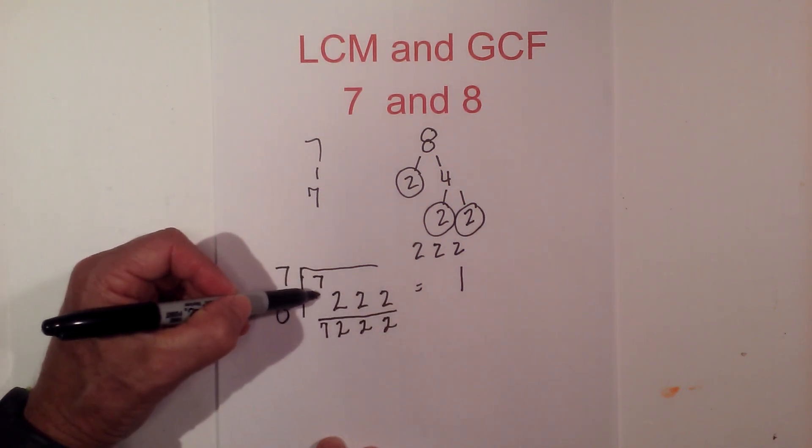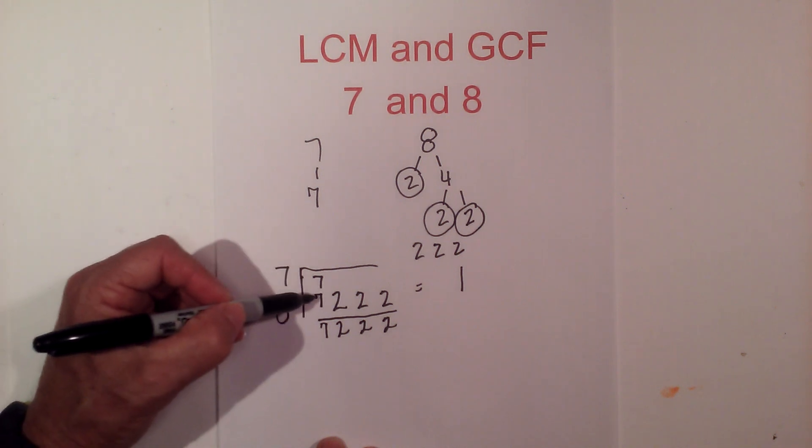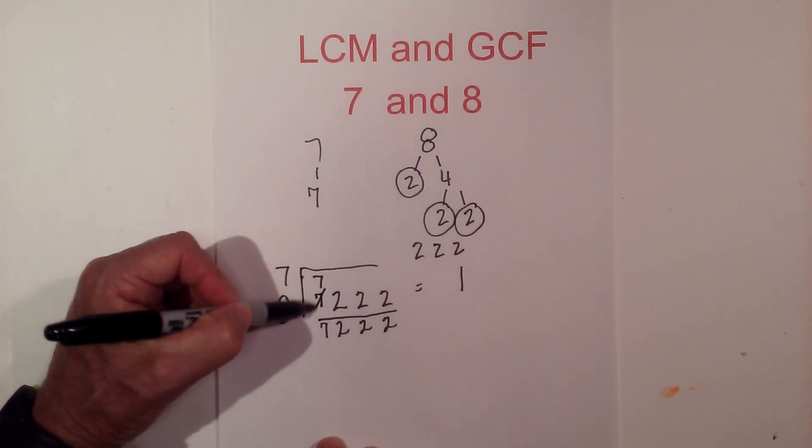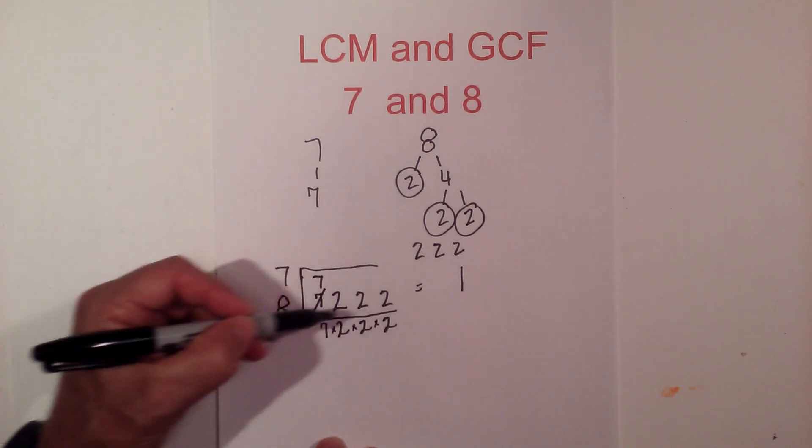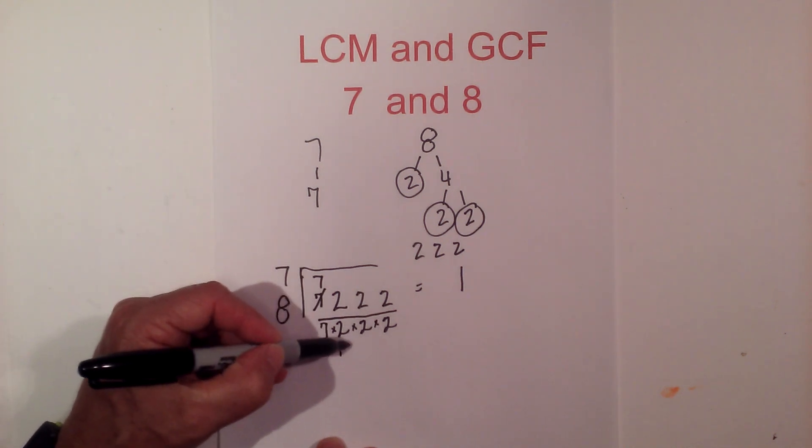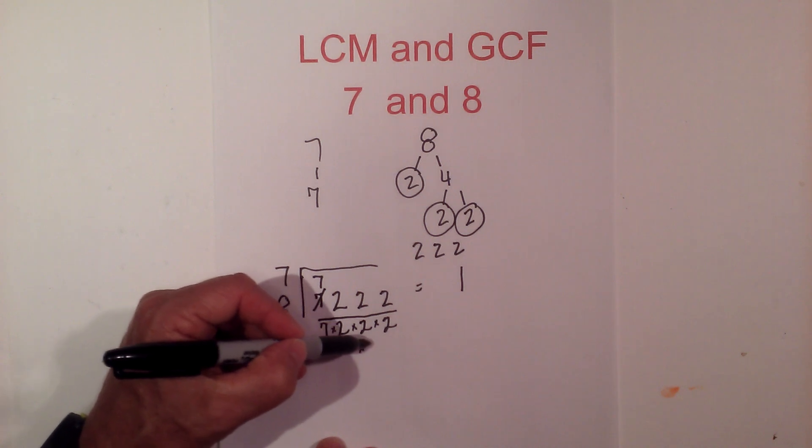Now by chance if I would have had a 7 here, I would have still just brought down one 7. Now all I do is multiply this together, so now we have 7 times 2 is 14, times 2 is 28.